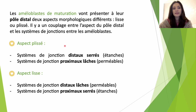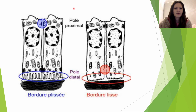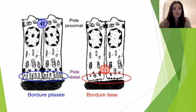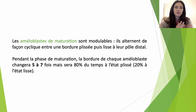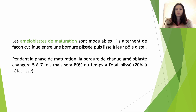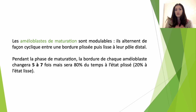Pour retenir simplement : plissé, disto-serré, et tout le reste en découle. Les améloblastes de maturation seront modulables : ils vont alterner de façon cyclique entre une bordure plissée puis une bordure lisse à leur pôle distal. Pendant la phase de maturation, on estime que la bordure de chaque améloblaste changera 5 à 7 fois mais sera 80 % du temps à l'état plissé.